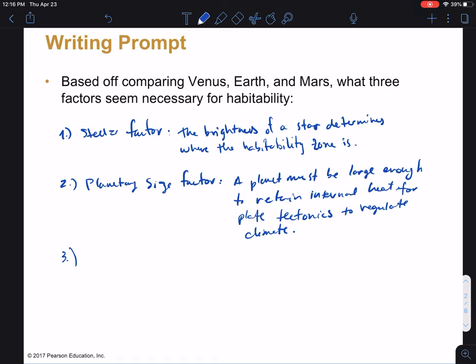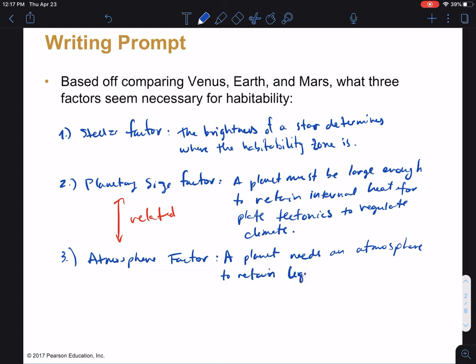Sequestering in the rocks and releasing it into the atmosphere to help regulate that climate. The third factor here is we're calling the atmosphere factor. Now, this is actually related, and the reason is, we'll see in just a second, but we'll say that a planet needs an atmosphere to retain liquid water. Maybe we should say, more precisely, liquid surface water.